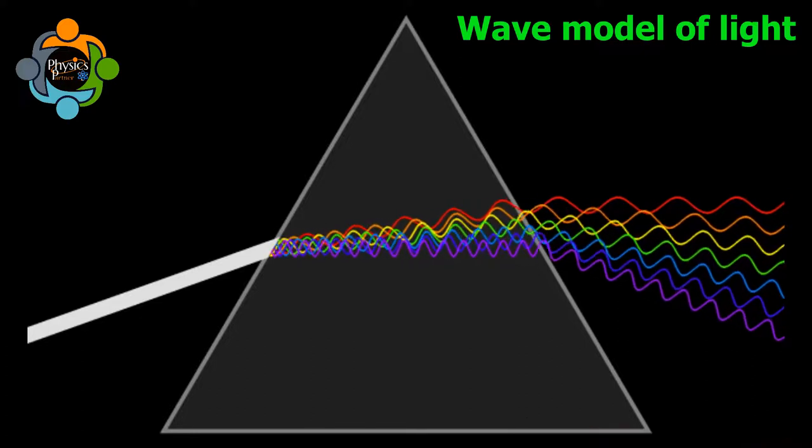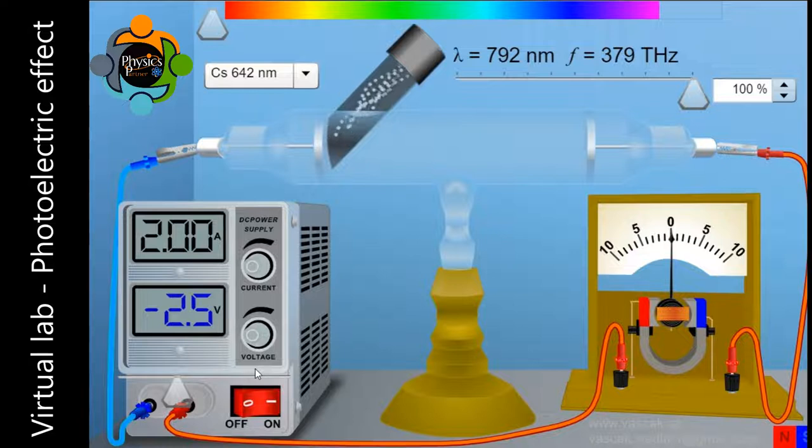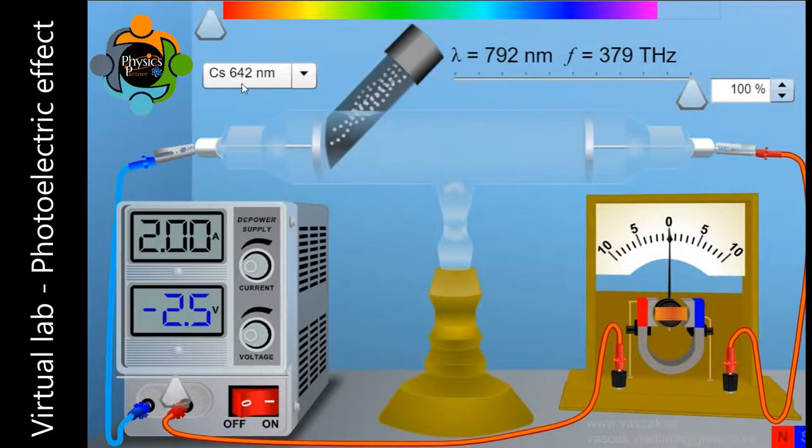Let's perform a virtual experiment to verify photoelectric effect. You can see I have a material here, cesium, and we have a galvanometer. We can see the current produced because of the effect of light. You can see there is no electron flowing right now, because as you already studied, the frequency should be more than the threshold frequency.